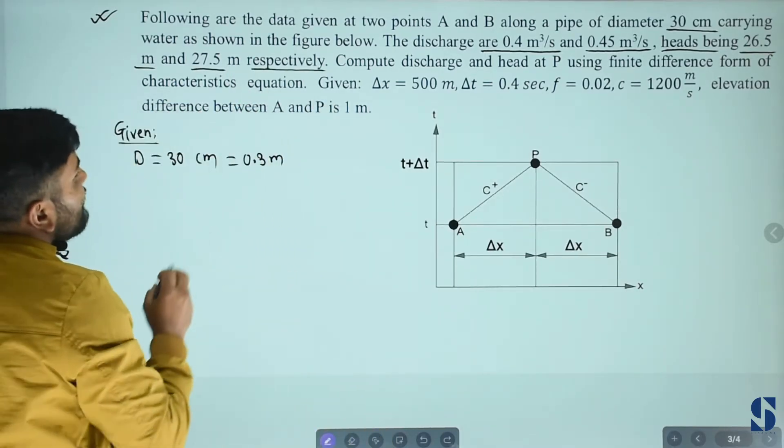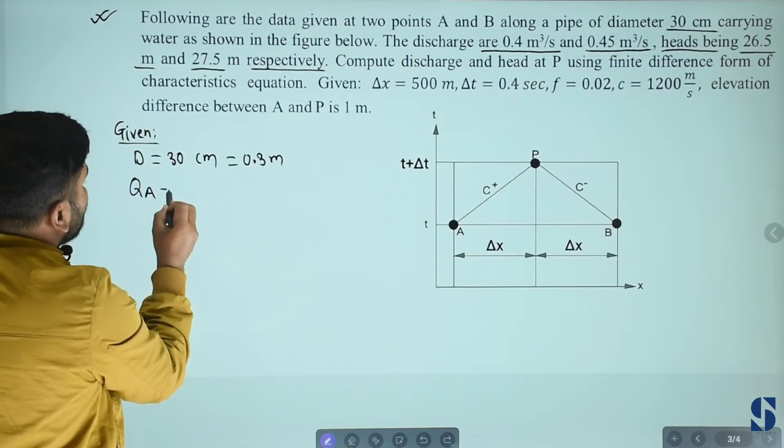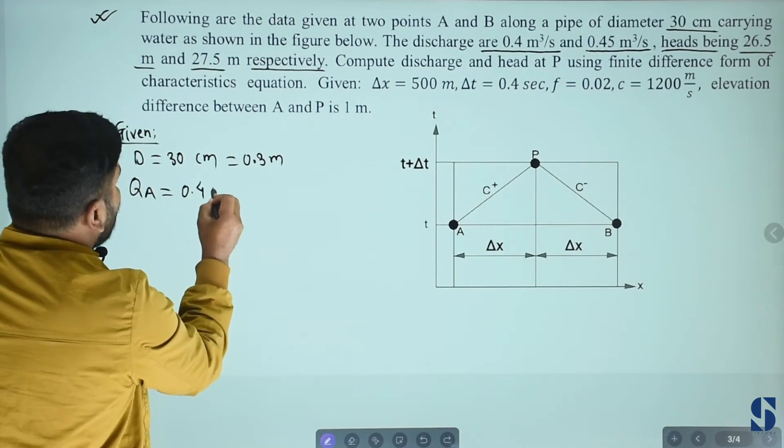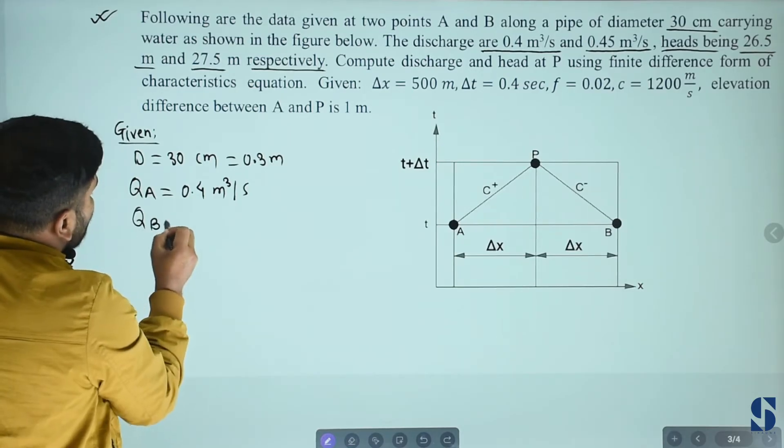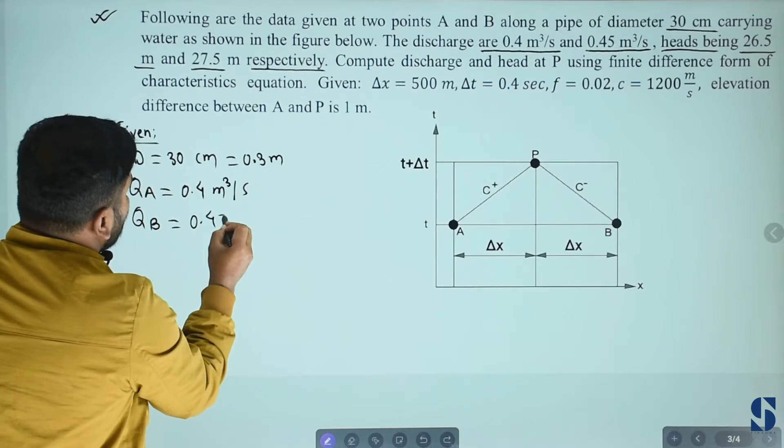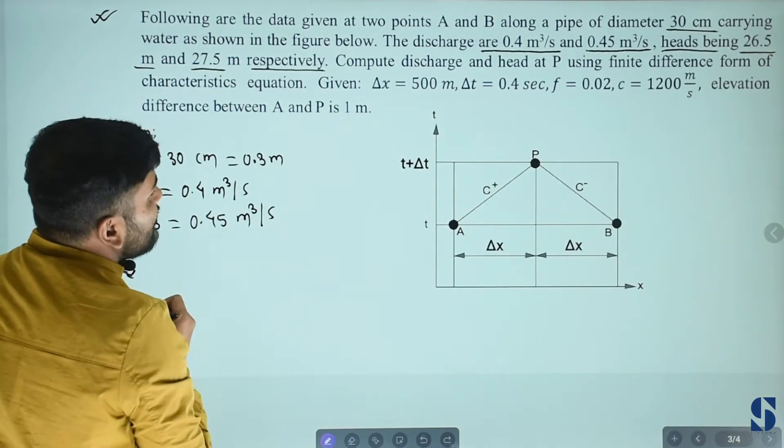When we start the discharge, QA discharge is 0.4 meter cube per second. Then B point discharge QB equals to 0.45 meter cube per second discharge.